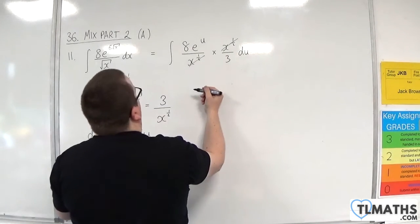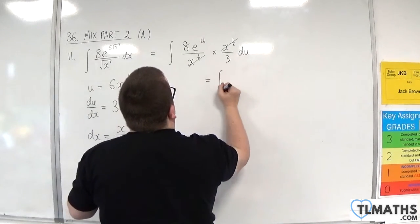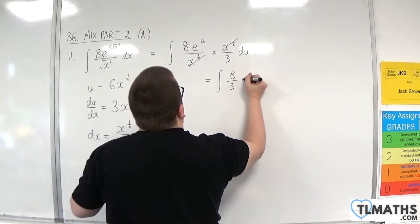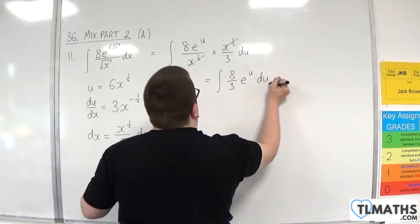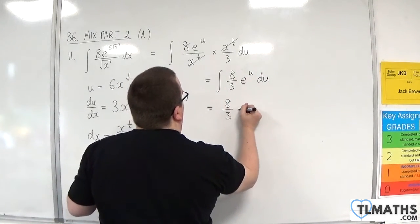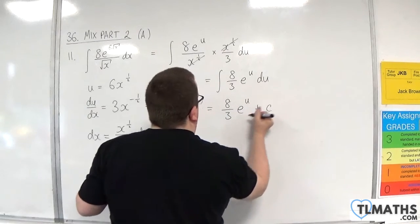And I have the integral of 8 thirds e to the u du, which integrates to 8 thirds e to the u, plus c.